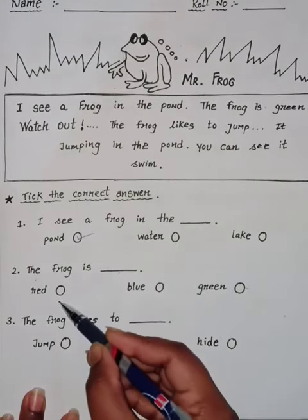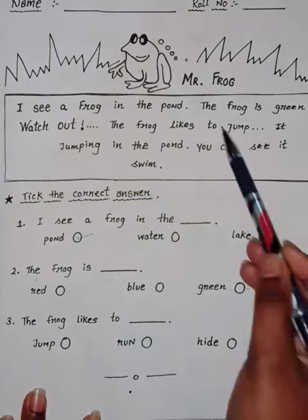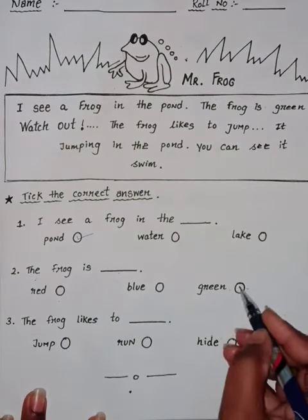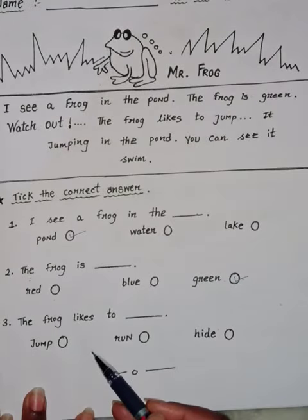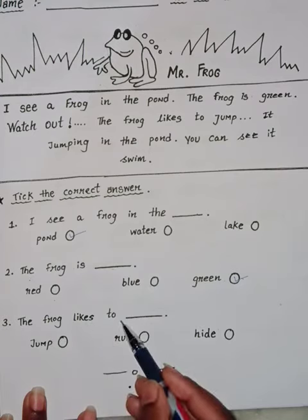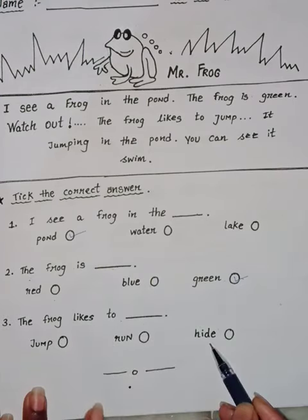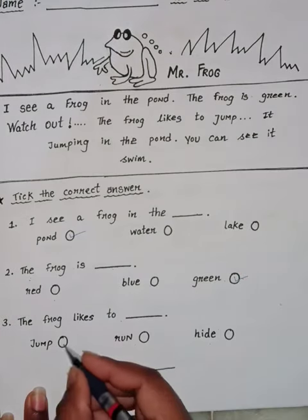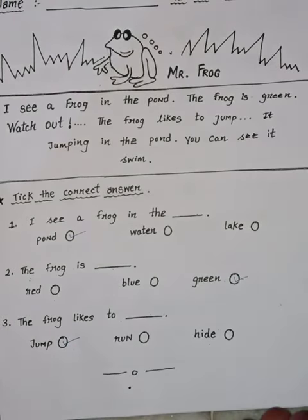Second question: The frog is dash — options are red, blue, green. The frog is green, so tick green and write green. Third question: The frog likes to dash — options are jump, run, hide, see. The answer is jump, so tick jump and write jump. That's it!